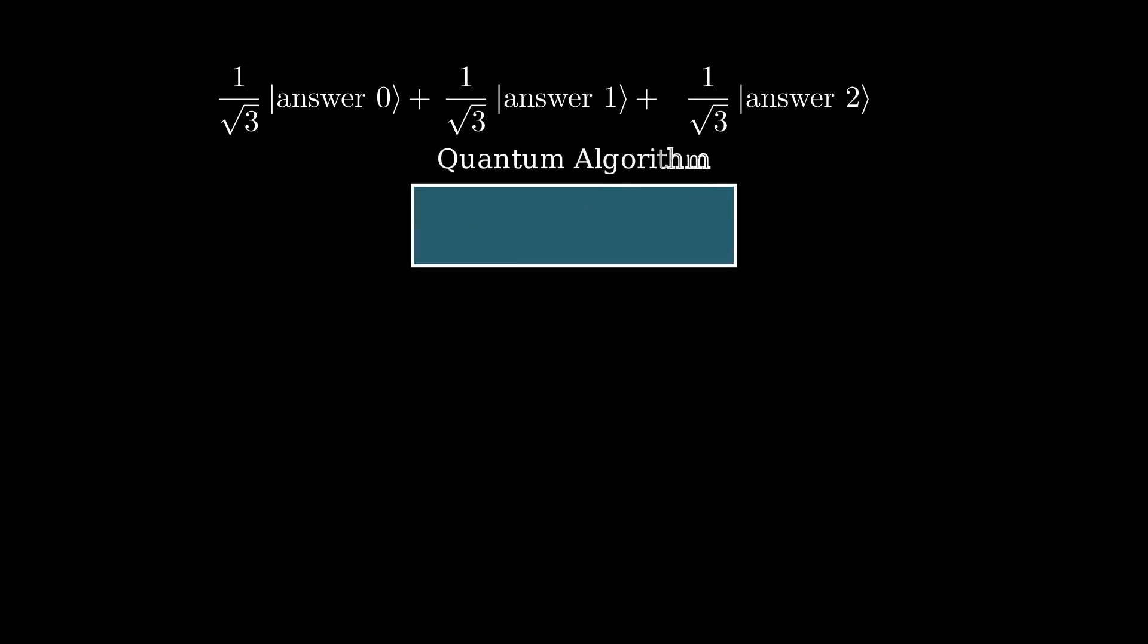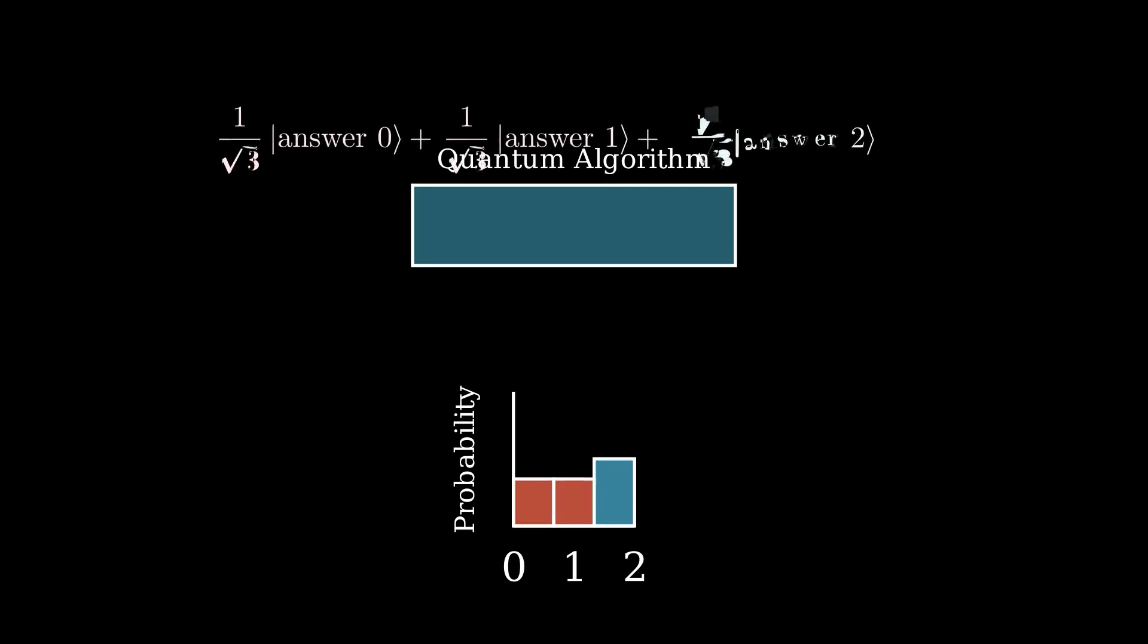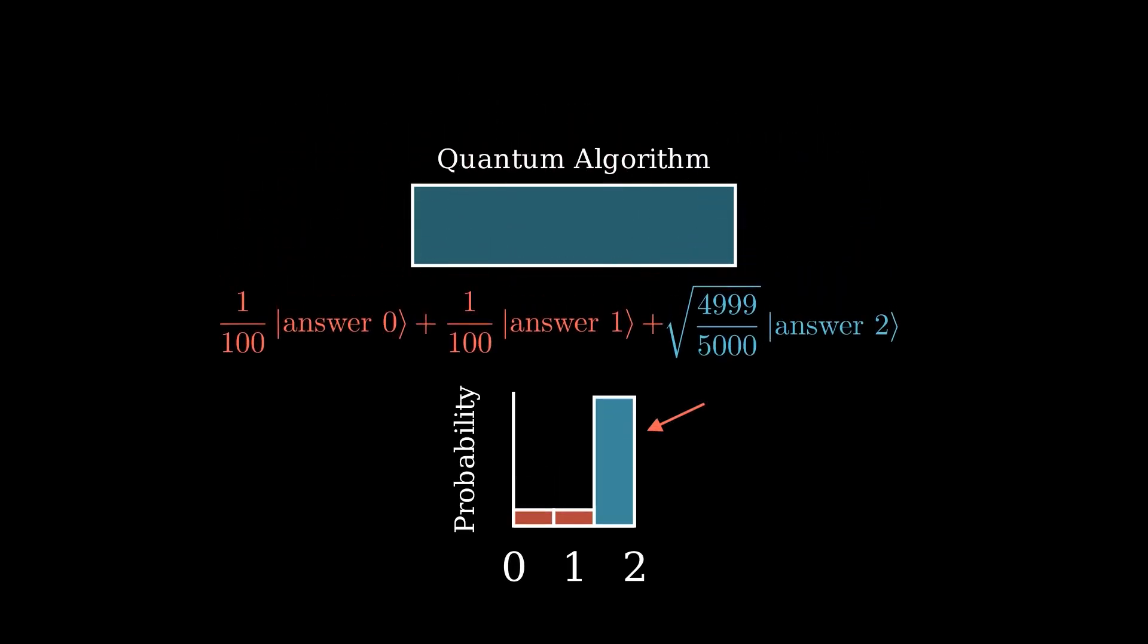The probabilities of measuring each answer stem from the superposition's coefficients. Think about it this way. Our quantum algorithms spread probabilities among states. If all states begin equally likely, a smart algorithm can nudge the probabilities towards the correct answer, even if we're unsure of what the answer is ourselves. The way each algorithm does this varies based on the type of problem you're trying to solve. Since probabilities must total 1, they're shuffled among states, though not entirely. This leads to a scenario where a quantum computer can be wrong sometimes, even when executing an algorithm perfectly.